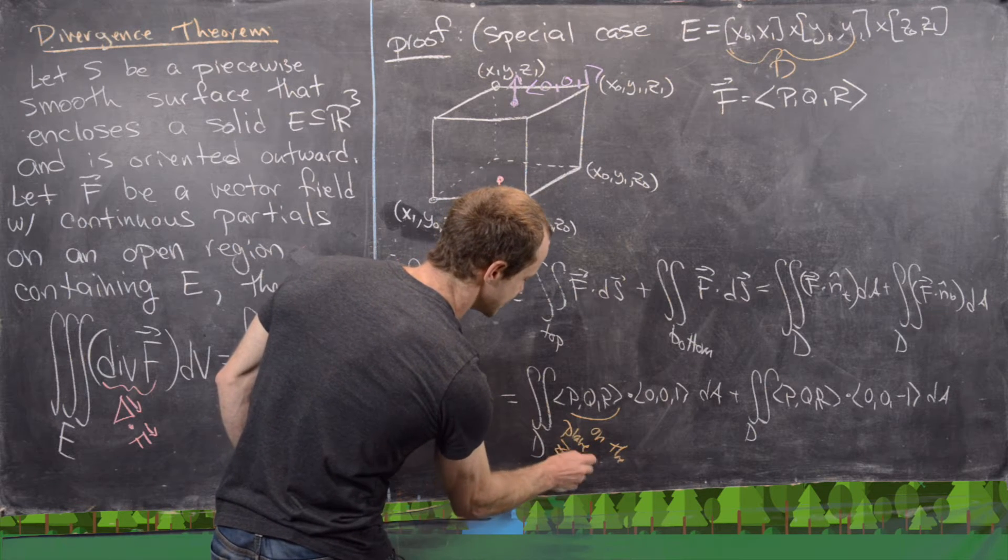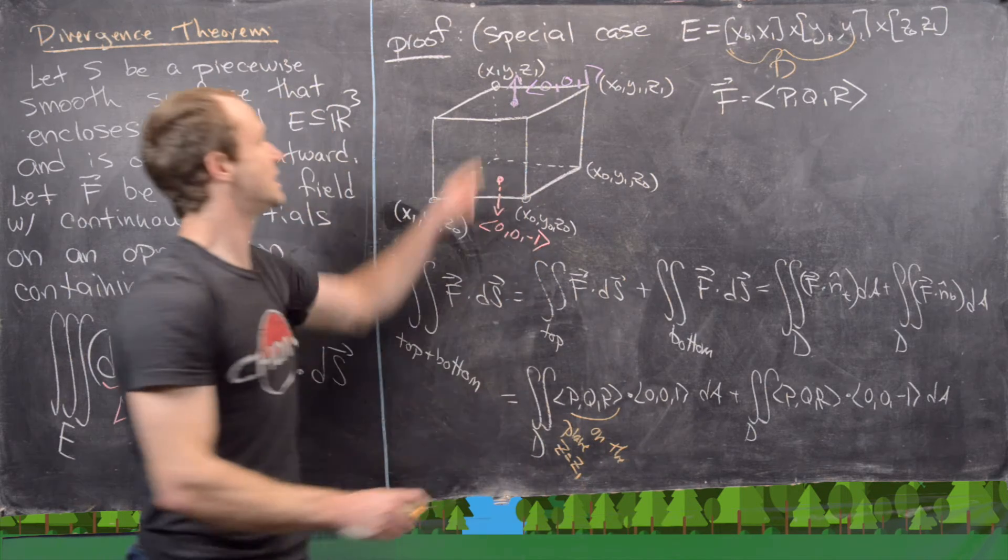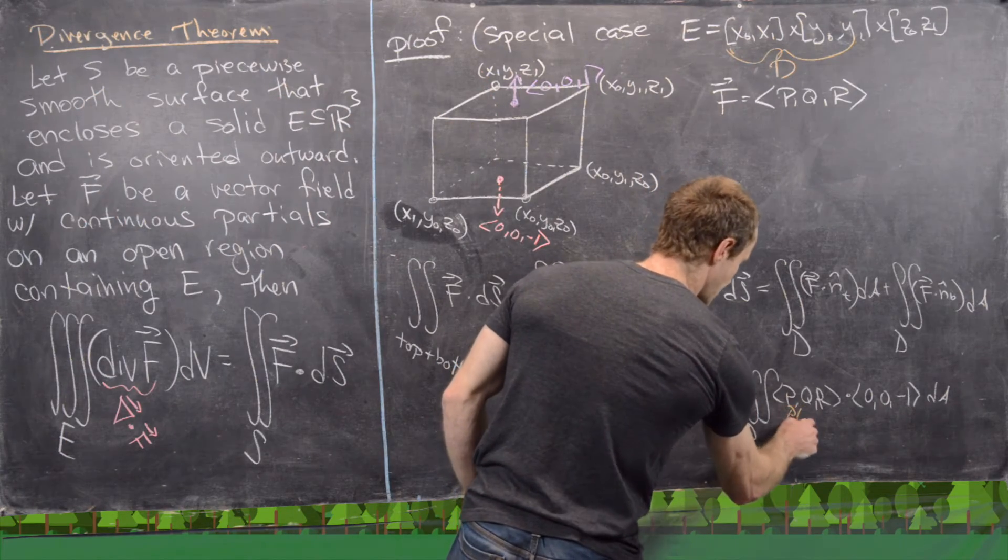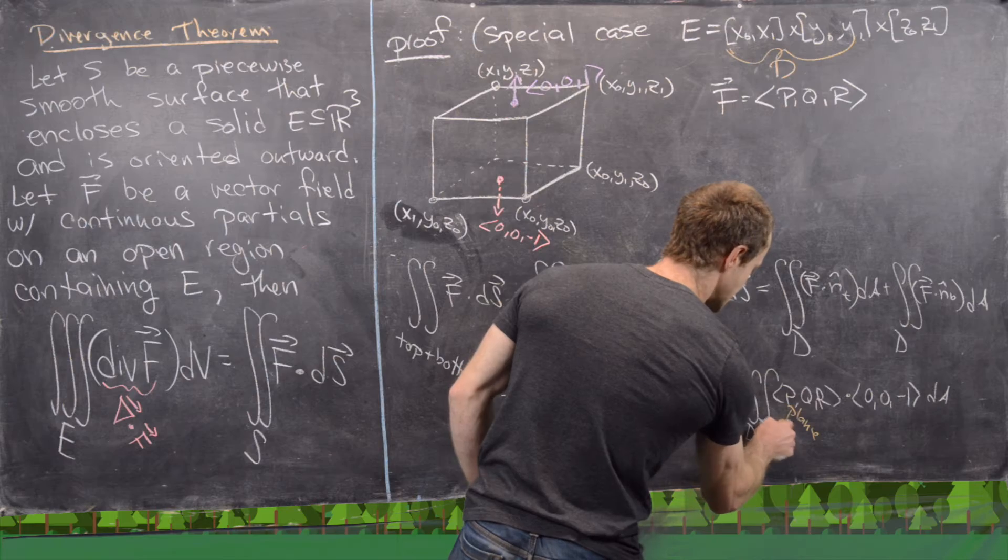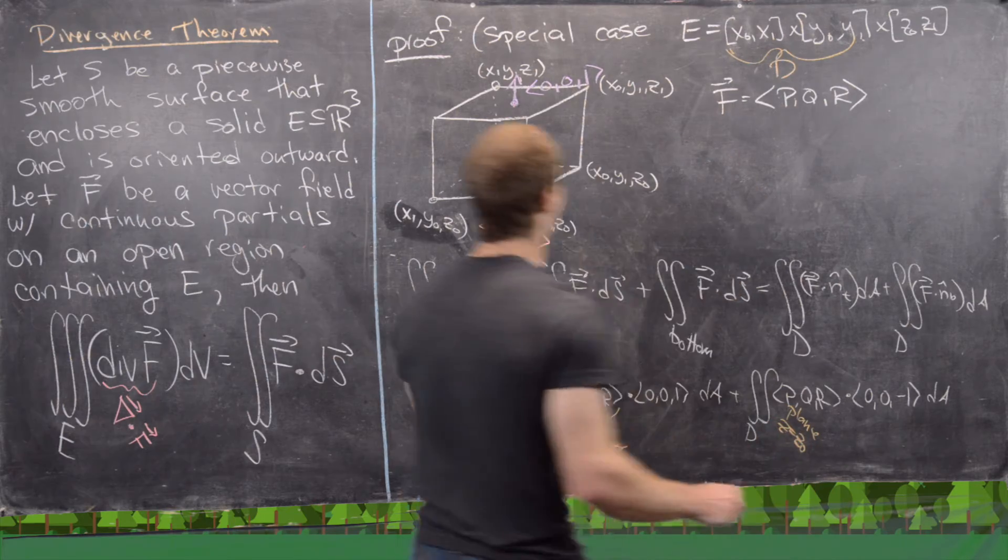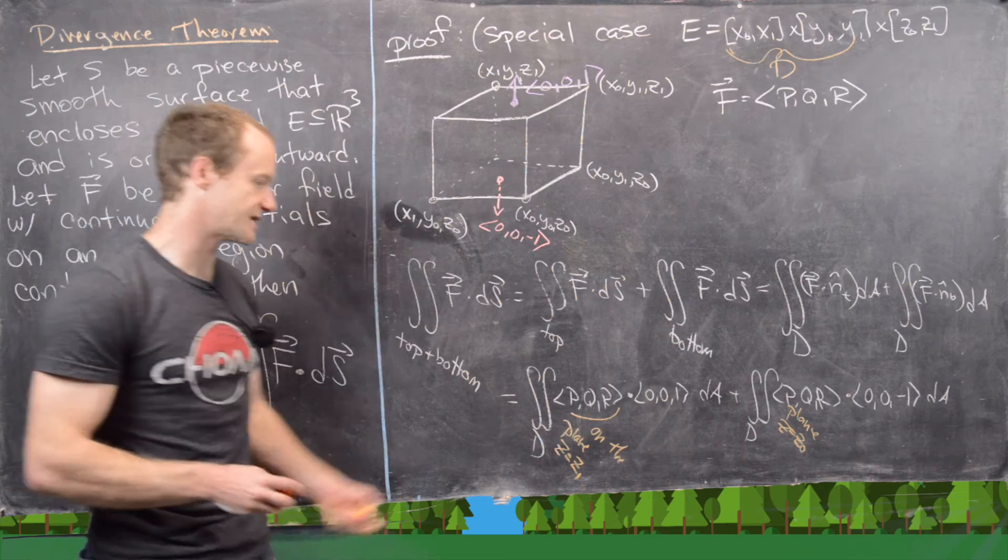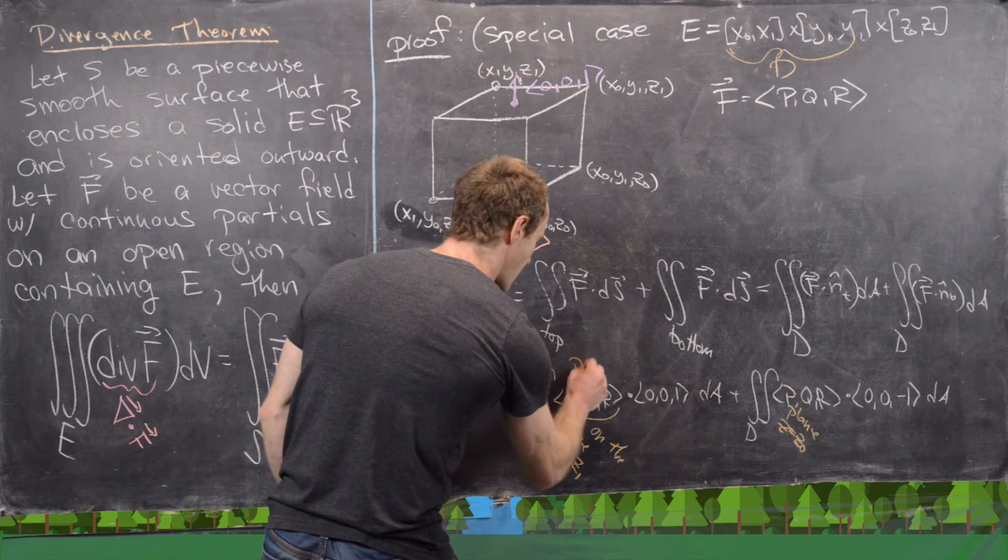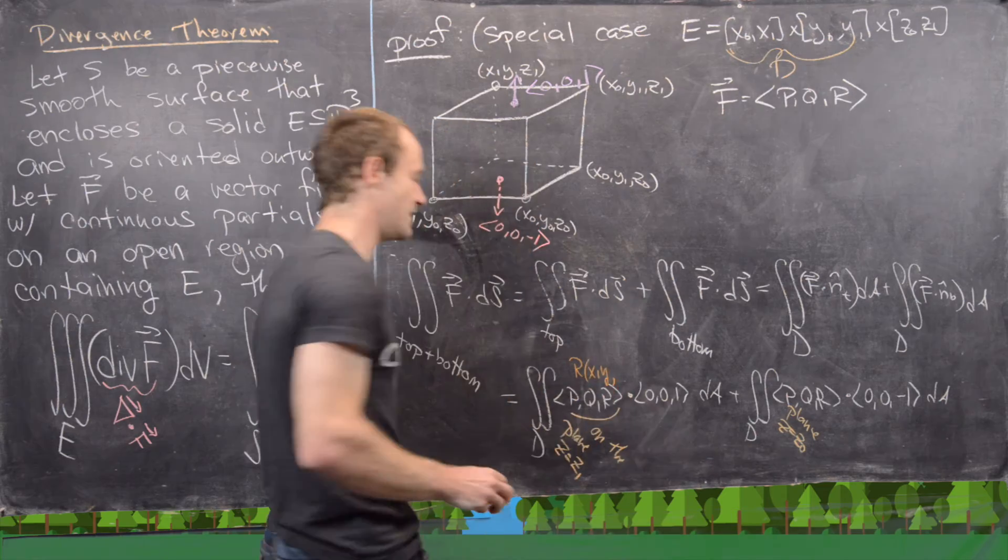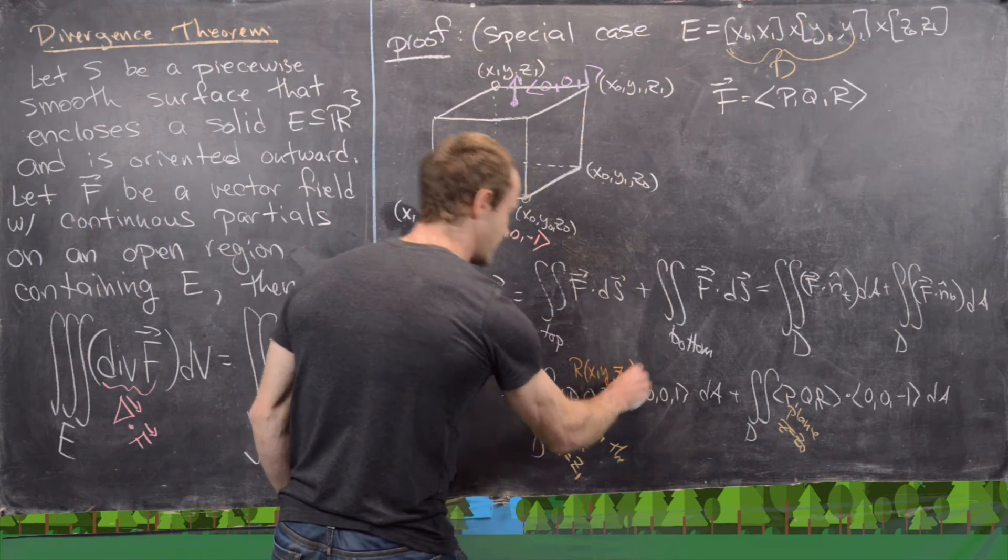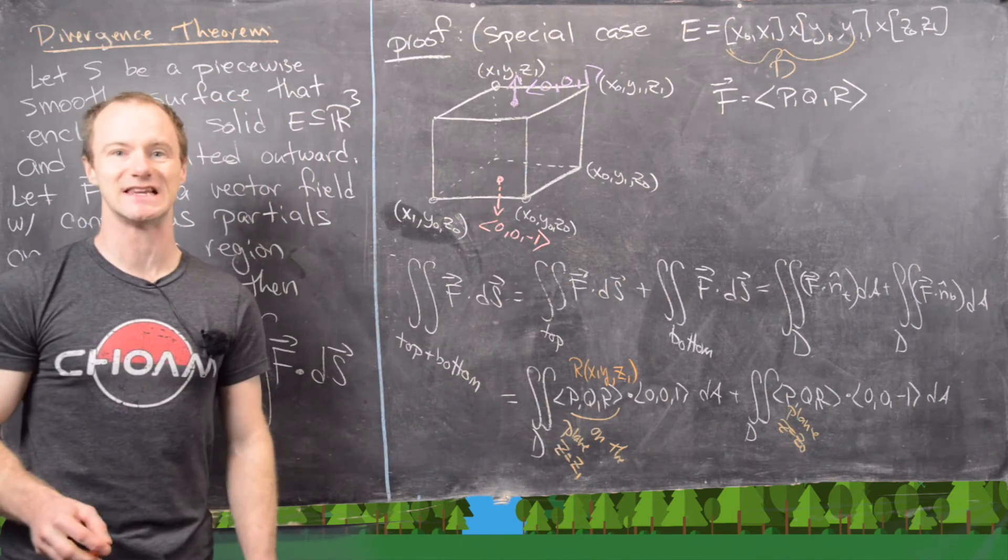And here I want to point out that in this spot we're on the plane defined by z equals z₁ because we're at the top, and down here we're on the plane defined by z equals z₀ because we're on the bottom.